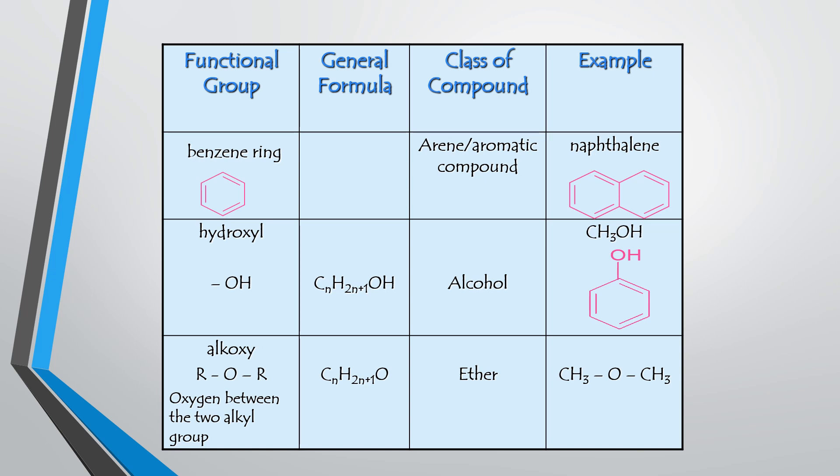The next functional group is the hydroxyl group. Hydroxyl comes from the words hydrogen and oxygen. The general formula for the hydroxyl functional group is CnH2n+1OH, and it belongs to the class of compound called alcohol.